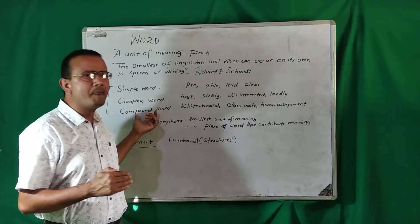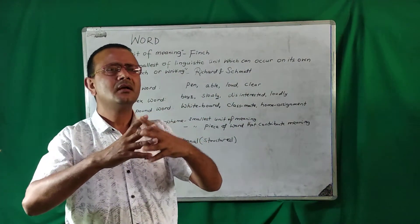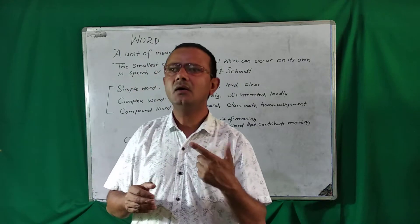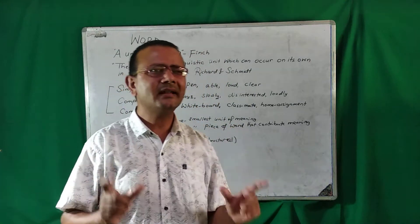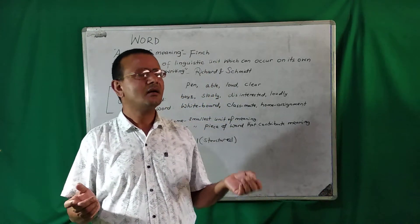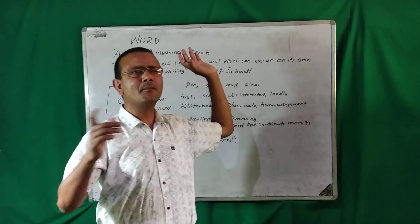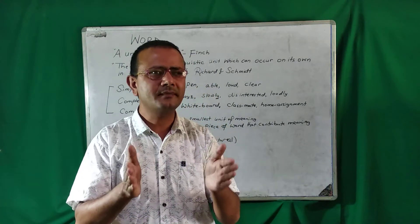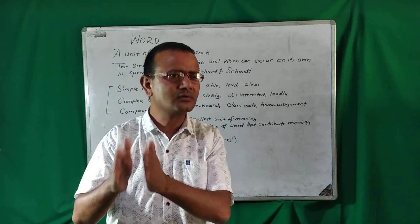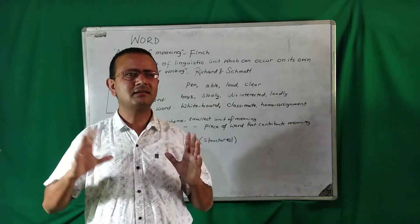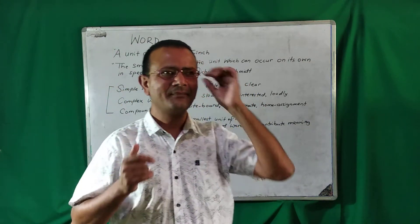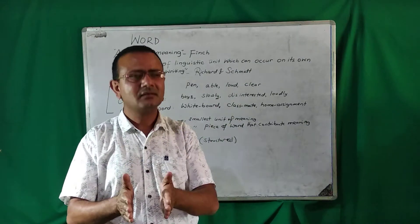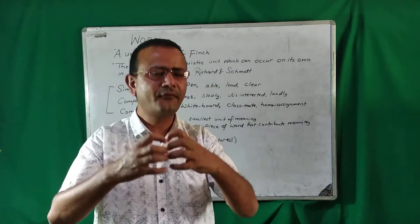The other type is compound words. Two words make one word — compounding is generally two words blended together to make one word. For example: class teacher, headmaster, head mistress, whiteboard, blackboard, blackbird. Compound words are made up of generally two free morphemes. Independently they also have meaning — for example, 'white' has its own meaning, 'board' also has its meaning, 'class' also has its meaning, 'teacher' also has its meaning.